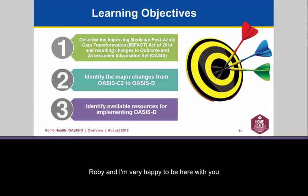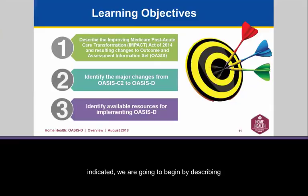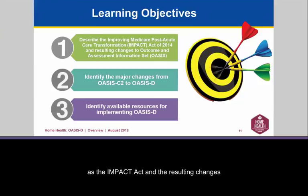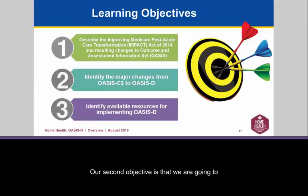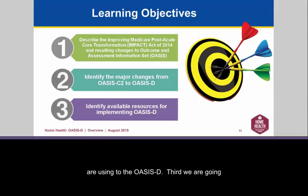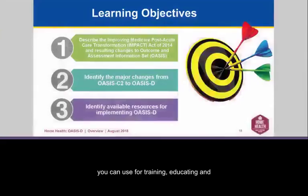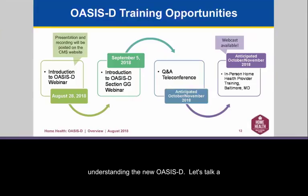Good afternoon, everyone. This is Kathy Robey, and I am very happy to be here with you today. I thought a good place to begin would be to identify our learning objectives. First, we are going to begin by describing the Improving Medicare Post-Acute Care Transformation Act of 2014, otherwise known as the IMPACT Act, and the resulting changes to the outcome and assessment information set, commonly known as OASIS. Our second objective is to identify the major changes occurring from the OASIS-C2 to the OASIS-D. Third, we are going to identify the available resources for training, educating, and understanding the new OASIS-D.